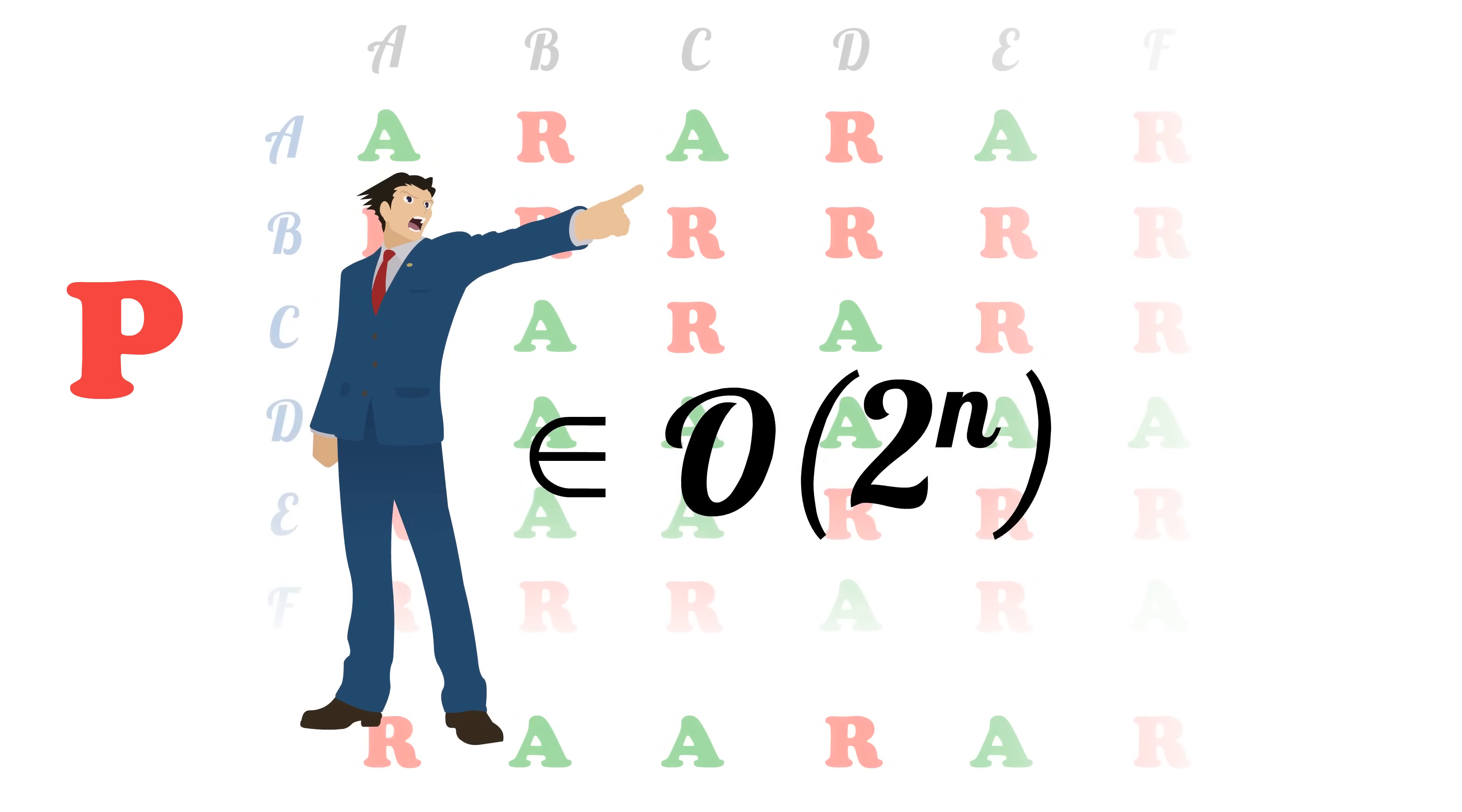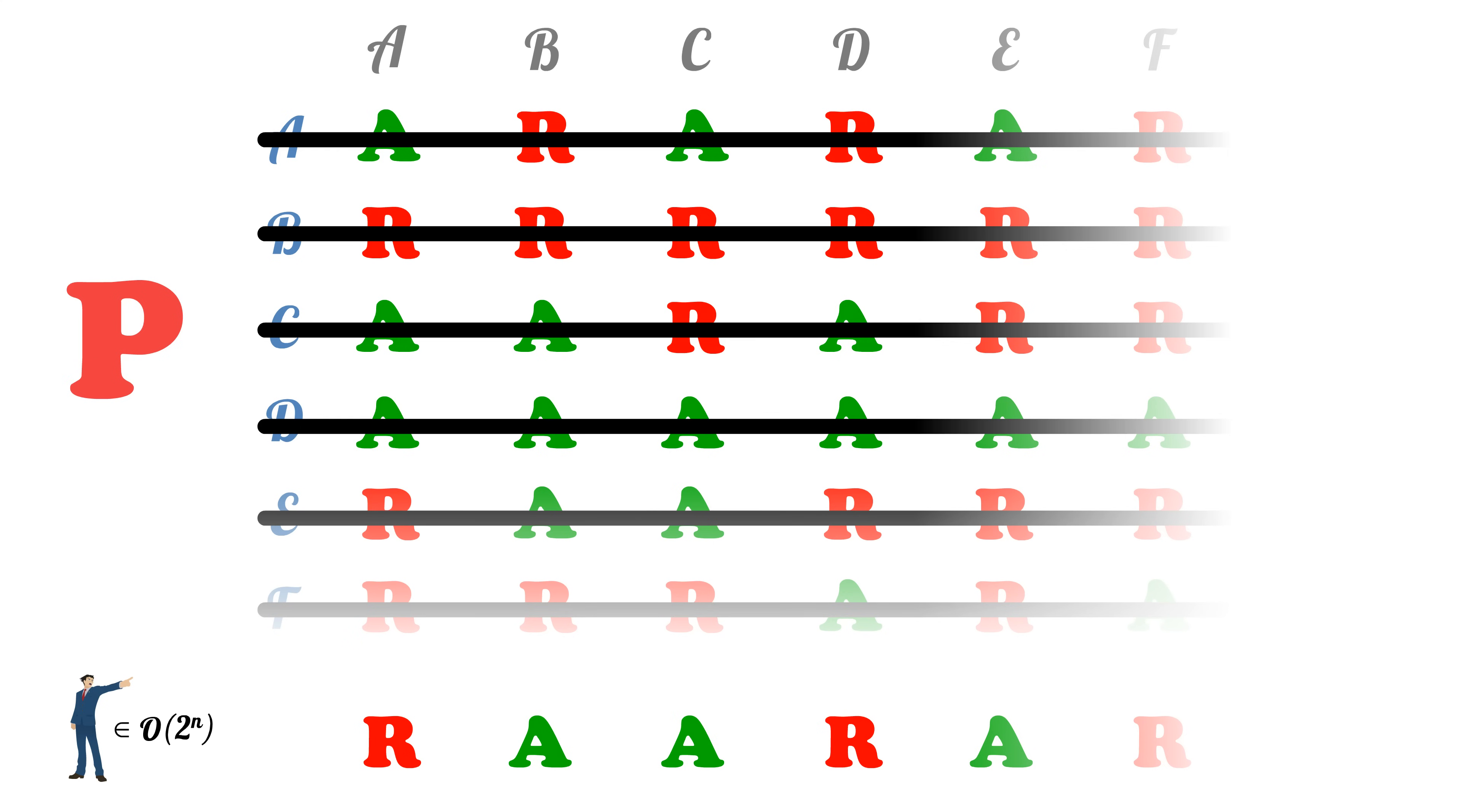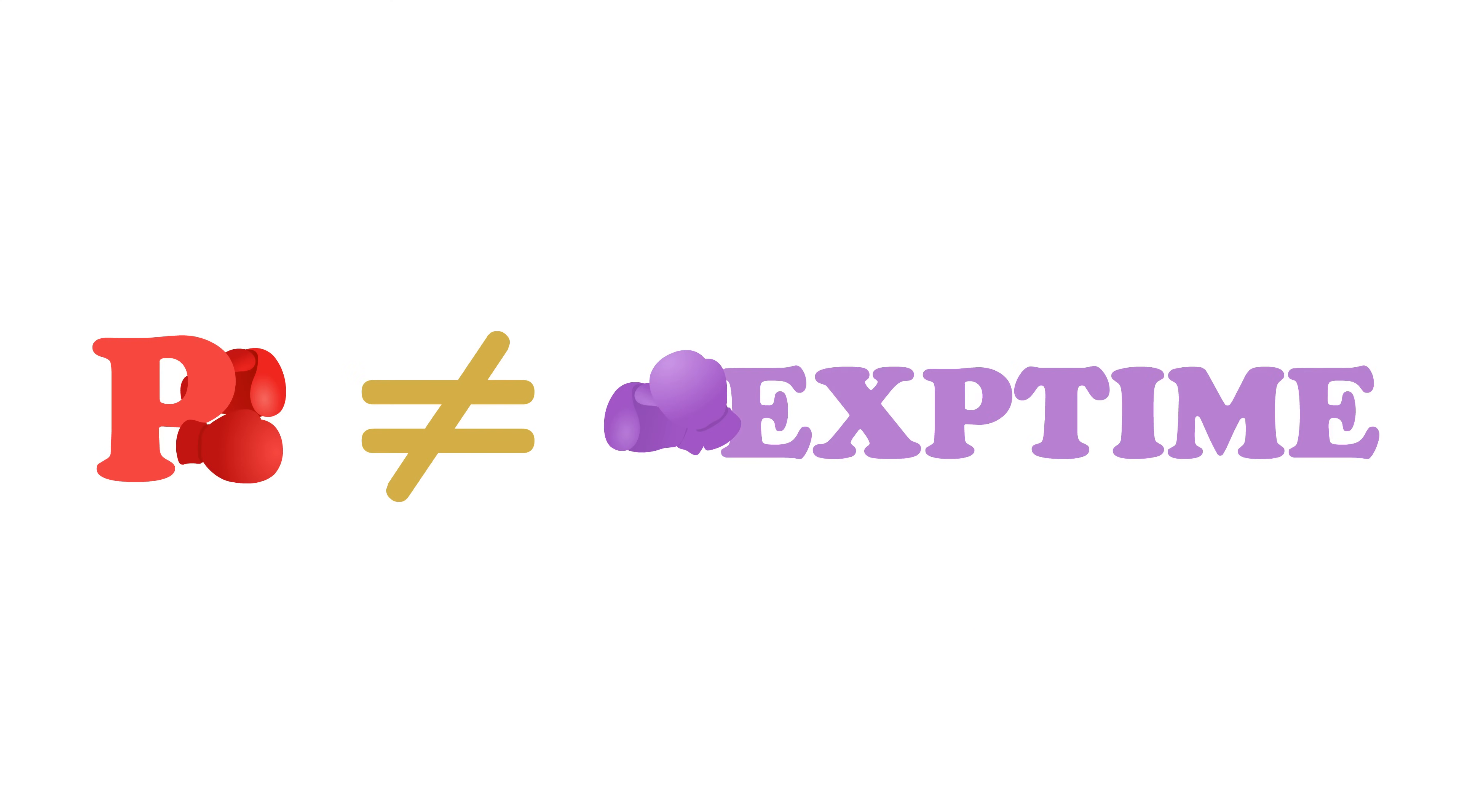However, is there a polytime algorithm that gives the same output as our contradictor? Well, the contradictor can't be any of the polytime algorithms on our list due to diagonalization, so it can't be in P. Therefore, P does not equal exp time.